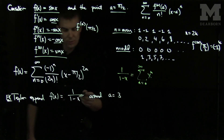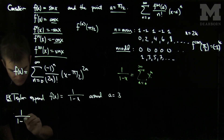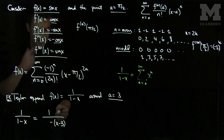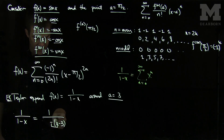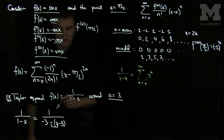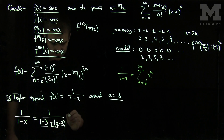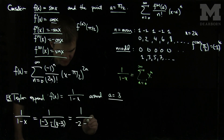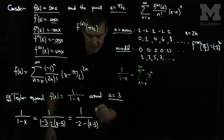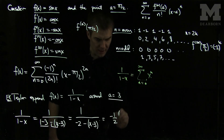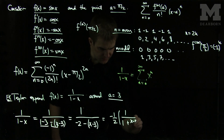We need to see an (x minus 3) in our formula. We can write 1 over (1 minus x) as 1 over (negative(x minus 3) minus 3 plus 1), which simplifies to 1 over (negative 2 minus (x minus 3)). Pulling out a factor of negative 2 gives us negative 1 half times 1 over (1 plus (x minus 3) over 2).